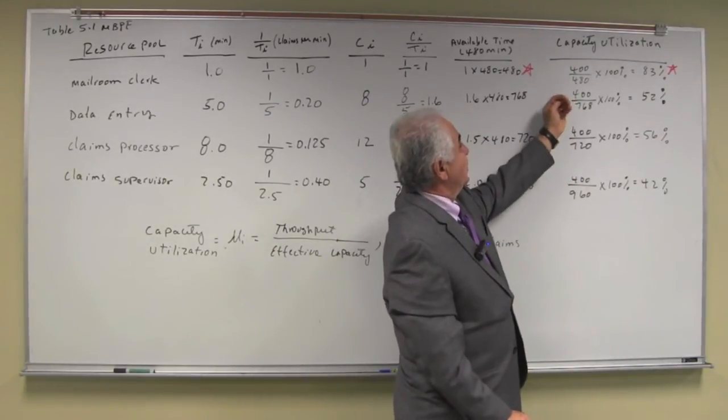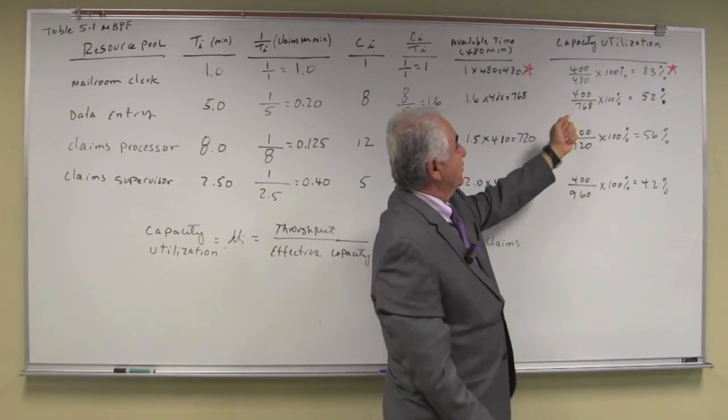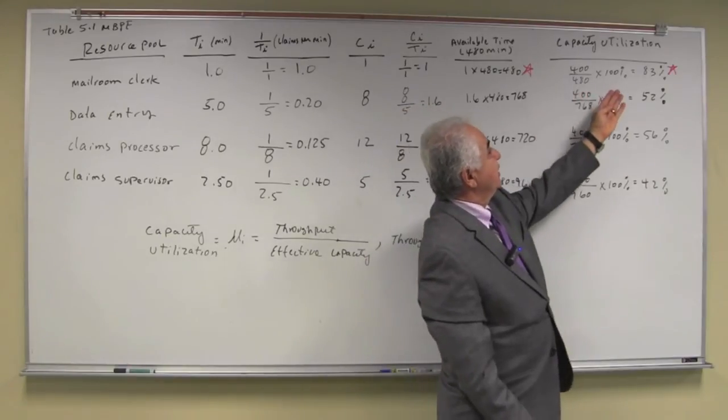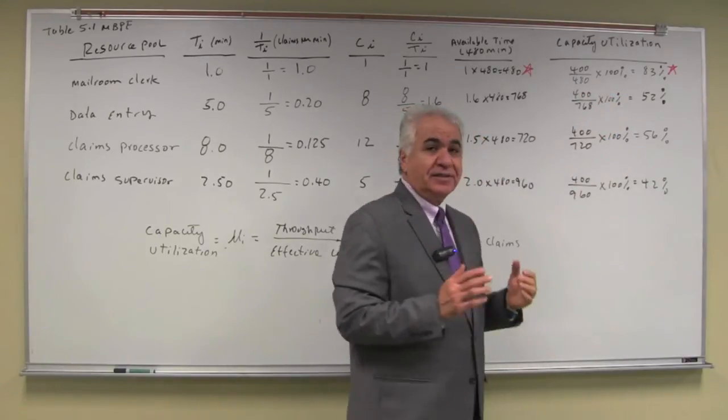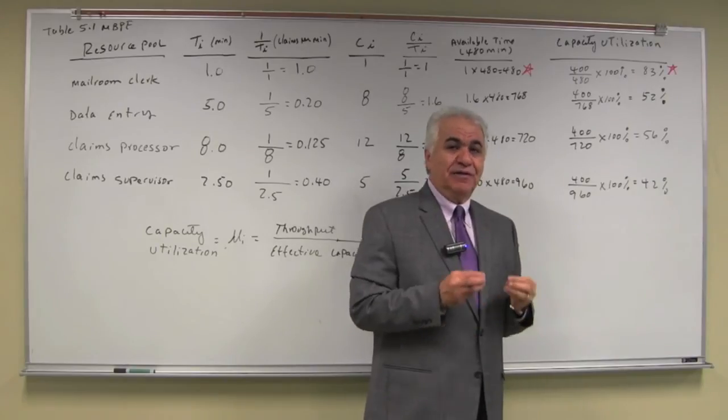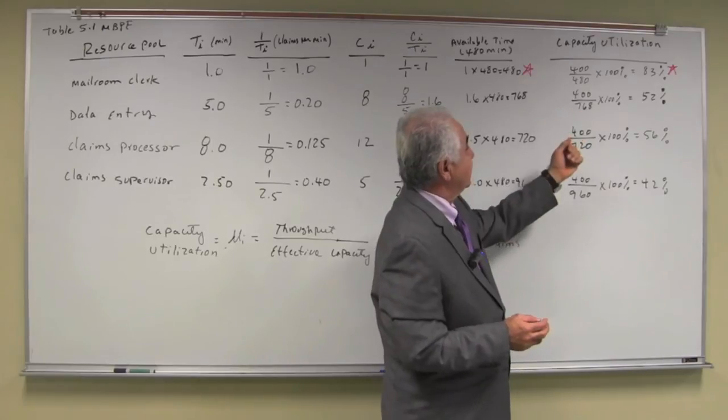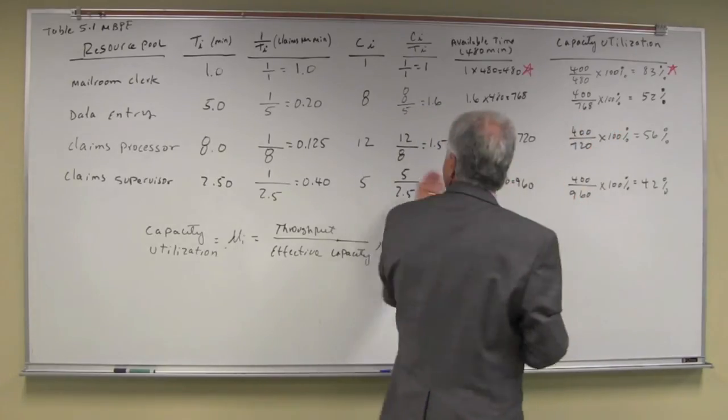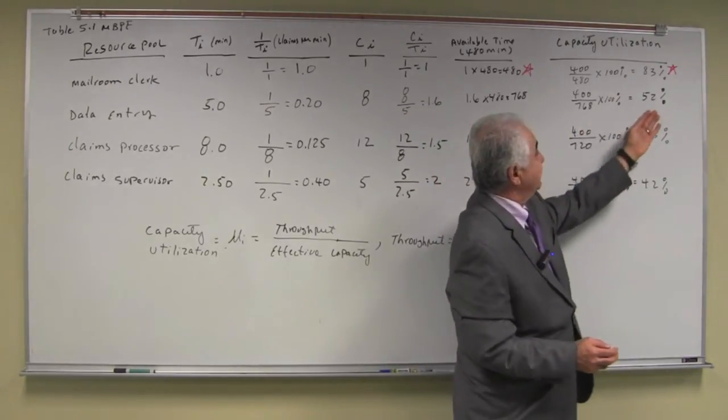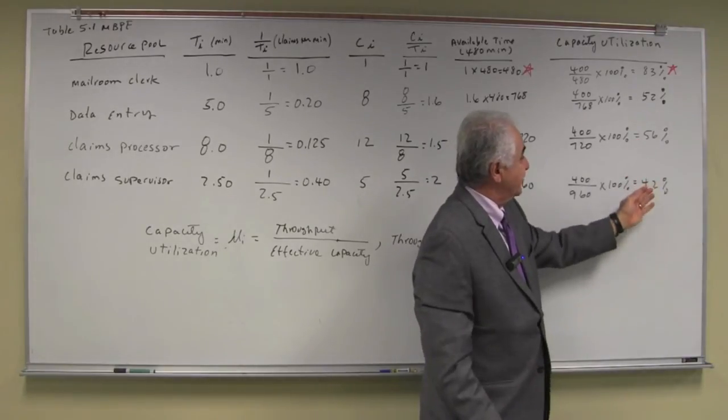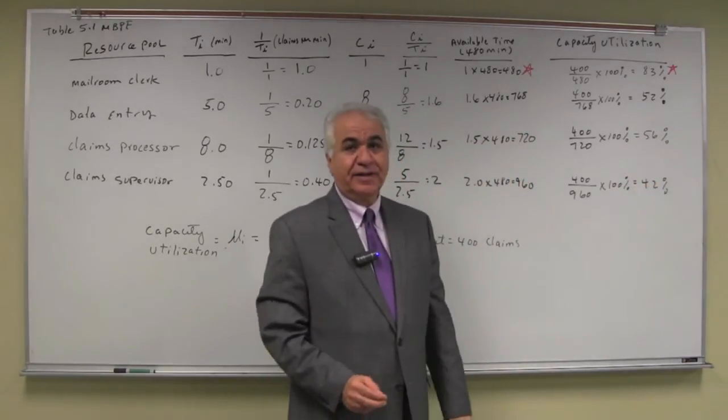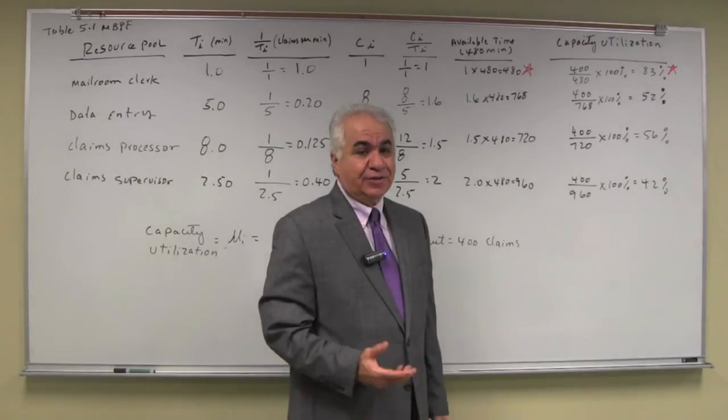So 400 divided by 480, showing that in percentage. So the capacity utilization of the main room clerk is 83%. Similarly, the capacity utilization for data entry is 52% and then 56% and 42%. As you can see,